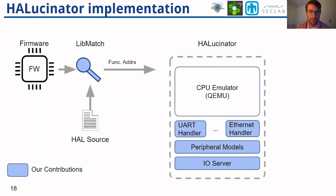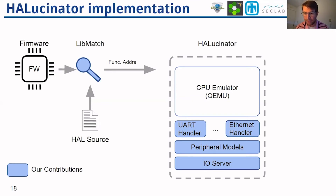Through our implementation, we take the firmware and run it through a tool called libmatch, which takes the hardware abstraction library source code and produces a list of function addresses within the firmware for the functions within that abstraction library. We then implement a series of handlers, which provide low-level replacements for interacting with those functions, to peripheral models that model the behavior of different types of devices, all connected through an IO server that centralizes control of all external peripherals. This enables us to execute firmware on a generic CPU emulator without having to implement tens of thousands of different peripherals.